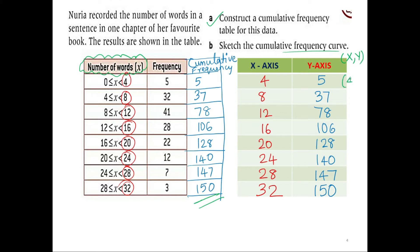So the coordinates are: (4, 5), (8, 37), (12, 78). I'm just marking the points — the coordinates that you will mark onto your graph, which should give you an S-shaped curve when joined.